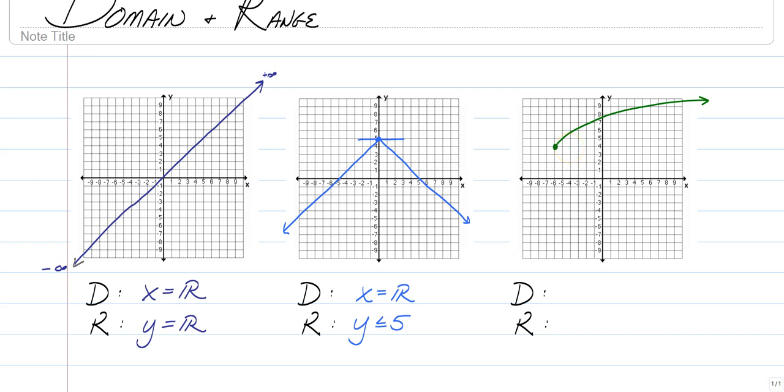So for the domain, it doesn't go left forever, but it does go from negative six and beyond. So for our domain, we want to say x is greater than or equal to a negative six.